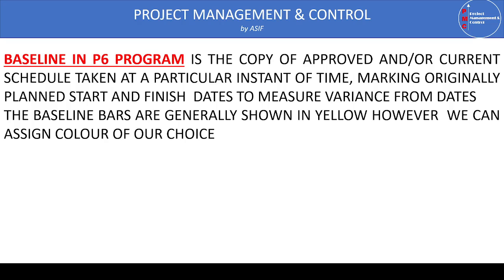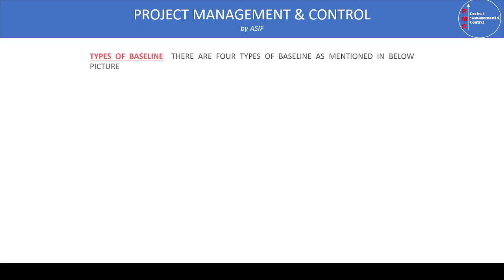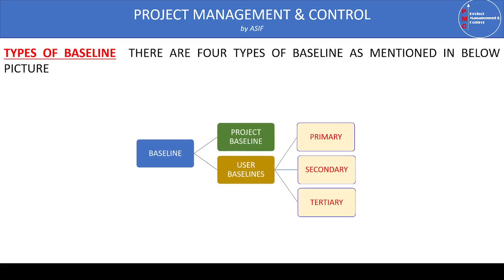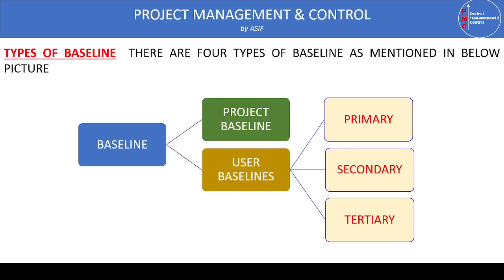Now let's look at the types of baseline programs. There are two major types: the project baseline and the user-defined baseline. The project baseline has no further divisions, but the user-defined baseline can be further divided into three types: the primary baseline, secondary baseline, and tertiary baseline. All of these baselines have their own special features.